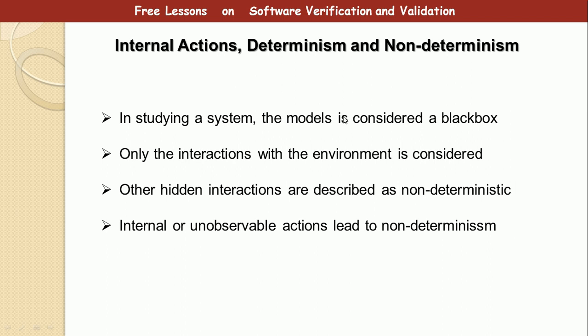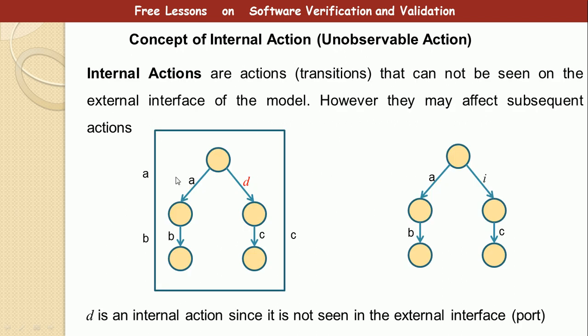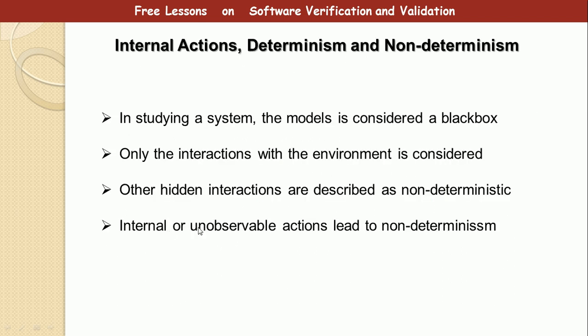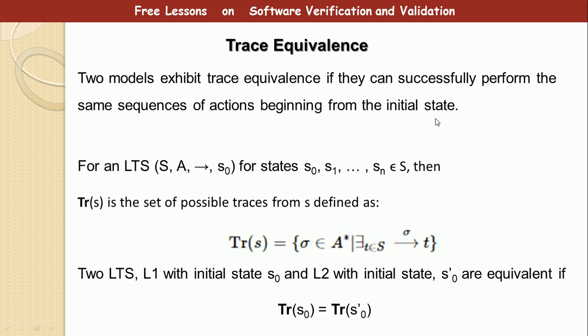Take note of these key points. A system or model is considered as a black box, as shown in the previous slide — meaning there are internal actions you may not know about. What we consider are just interactions with the environment, or external observable actions. Other hidden interactions are described as non-deterministic. Internal or unobservable actions lead to non-determinism.